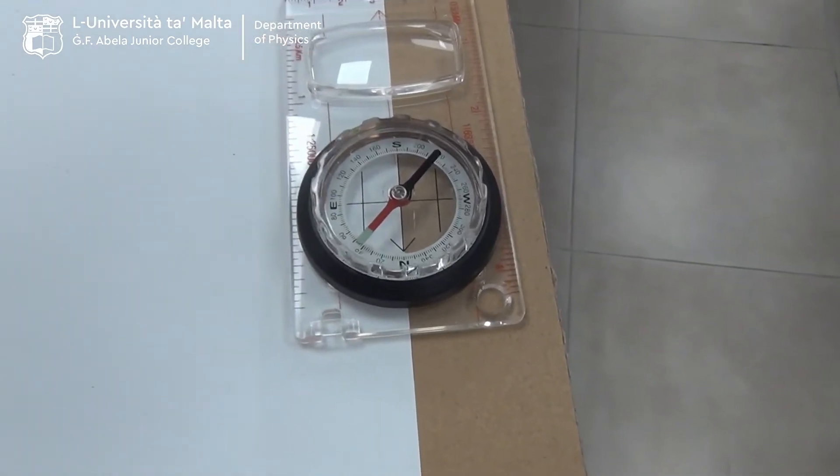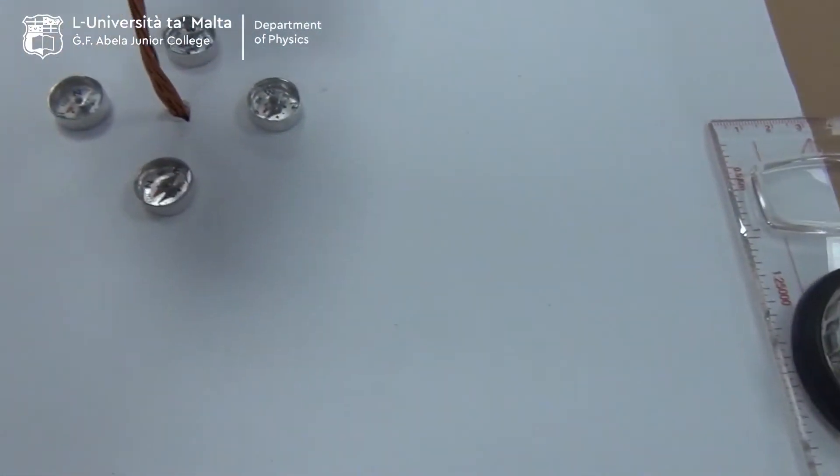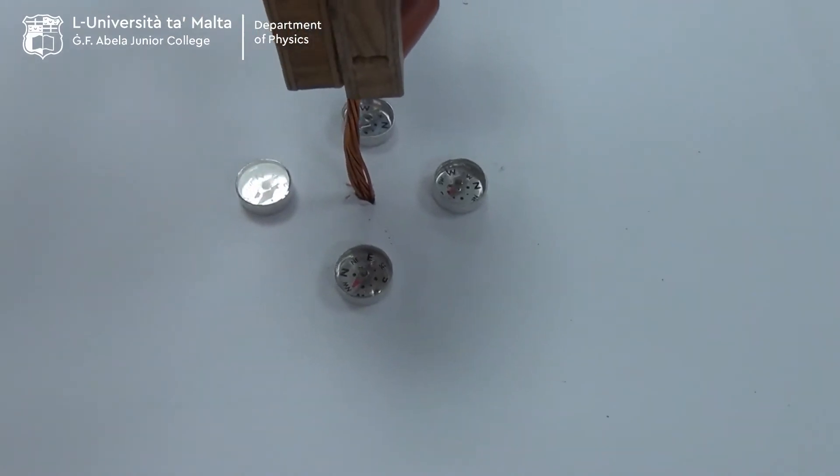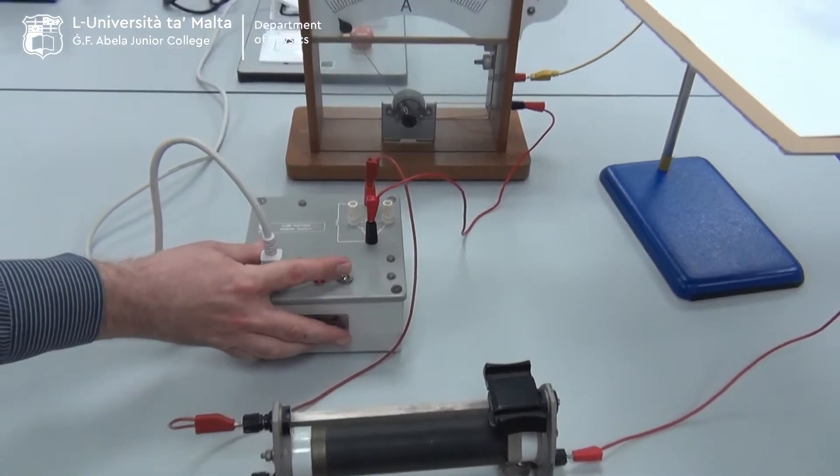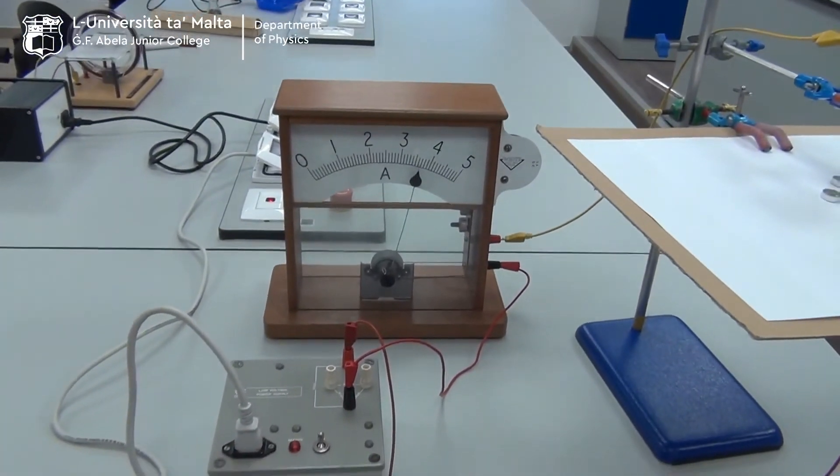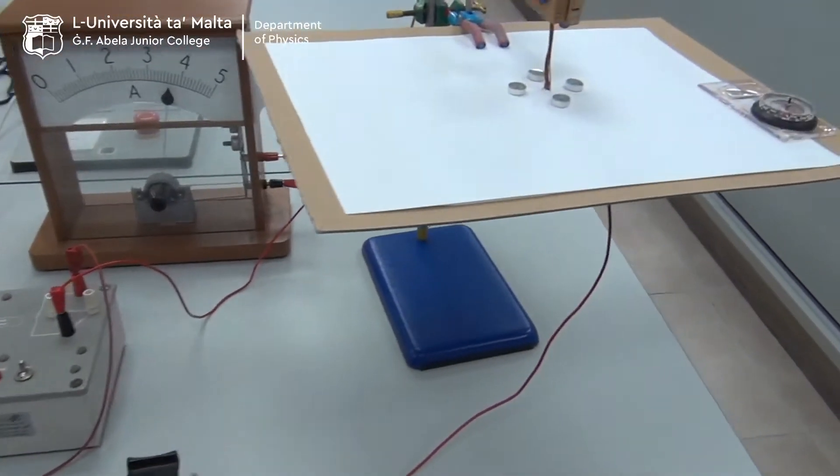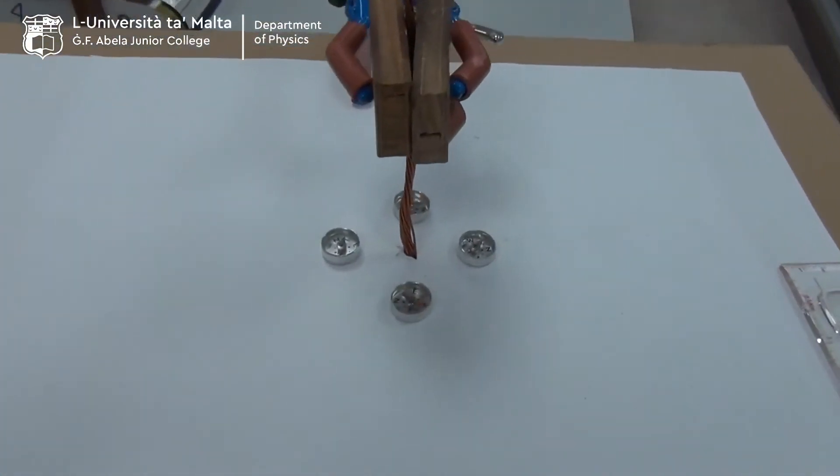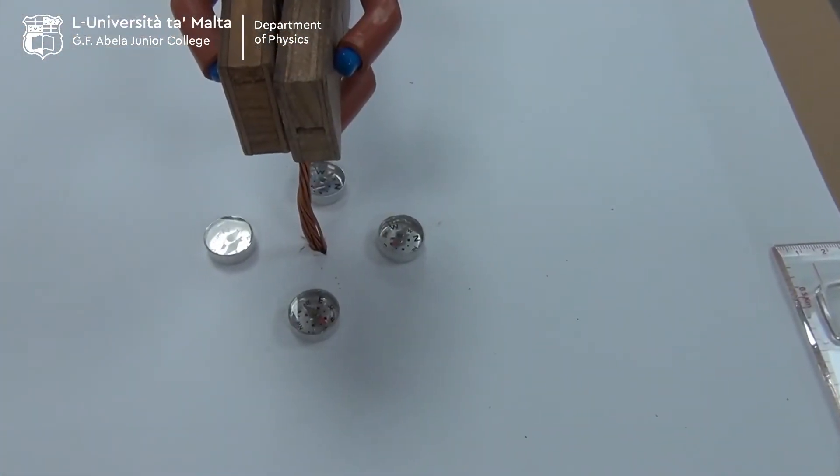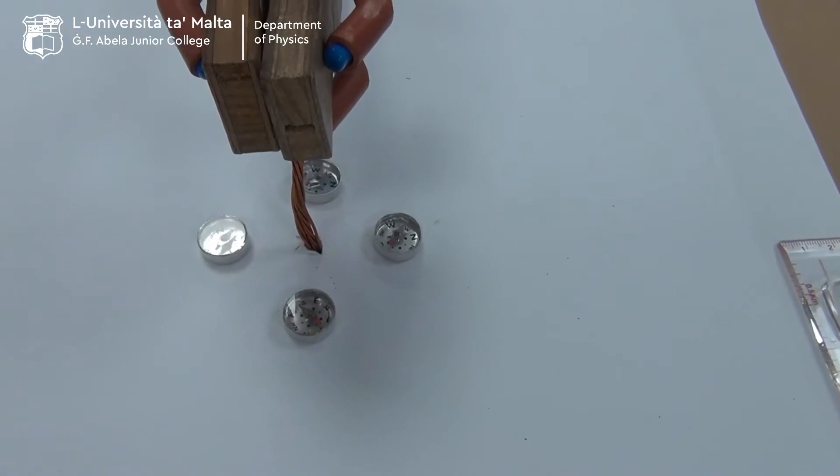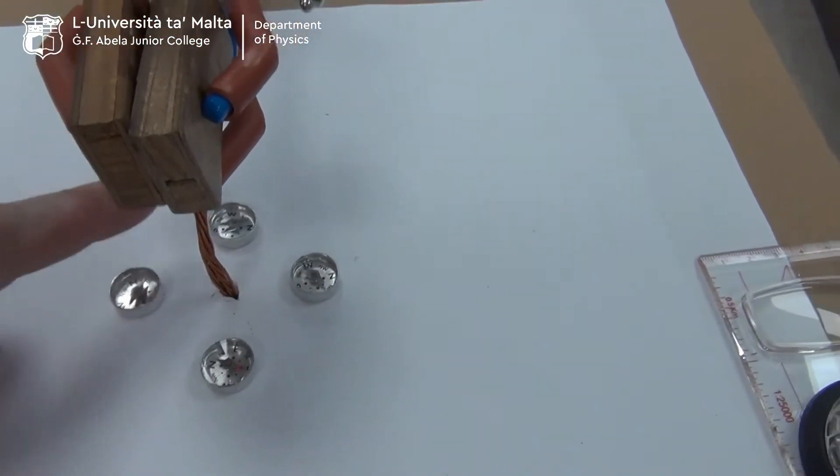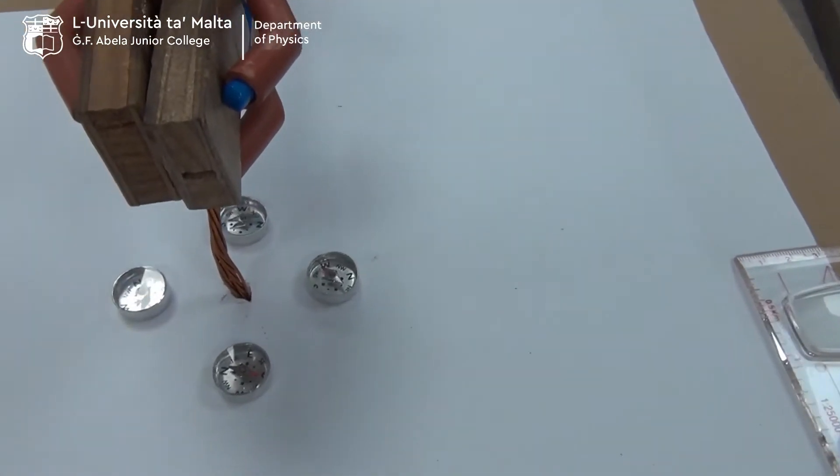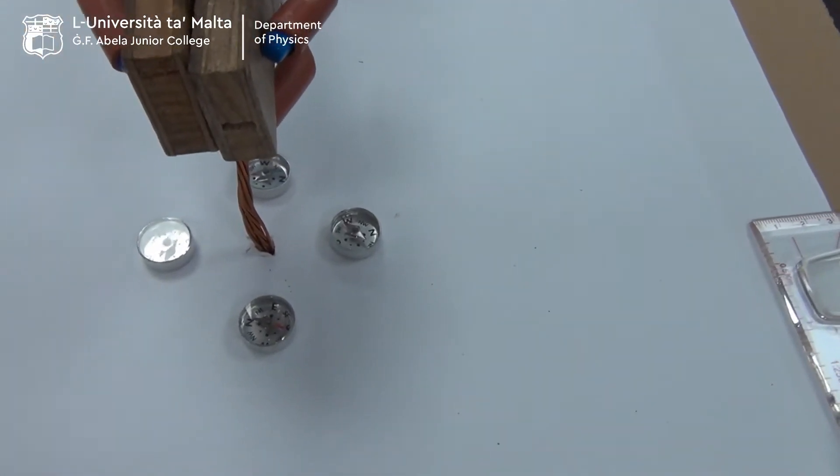All compass needles at the moment are pointing in the same direction. We shall now switch on the electric circuit. Current is flowing and we shall see the compass needles. When we switch on the current, the compass needles will change direction. We tap them a little bit to see that the compass needles show a circle.